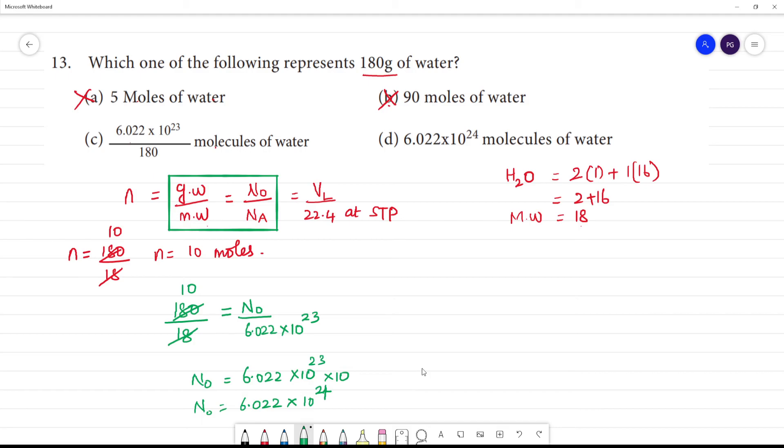So our answer is 6.022 into 10 to the power 24 molecules of water. Thank you.